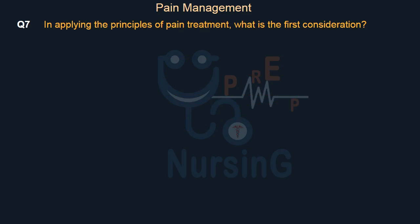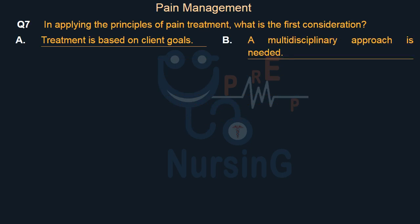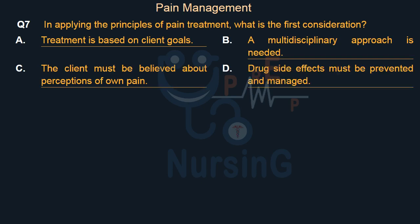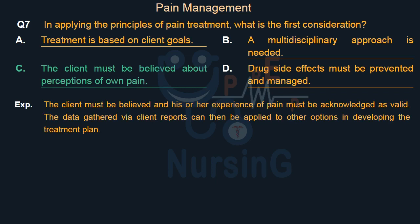In applying the principles of pain treatment, what is the first consideration? Option A: Treatment is based on client goals. Option B: A multidisciplinary approach is needed. Option C: The client must be believed about perceptions of own pain. Option D: Drug side effects must be prevented and managed. Right answer is Option C: The client must be believed about perceptions of own pain. The client must be believed and their experience of pain must be acknowledged as valid. The data gathered via client reports can then be applied to other options in developing the treatment plan.